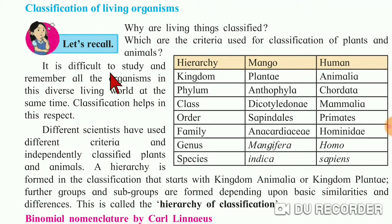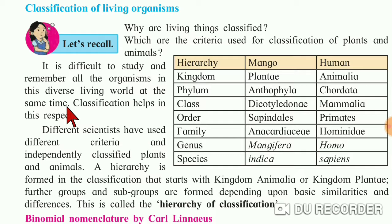It is difficult to study and remember all the organisms in this diverse living world at the same time. There are so many varieties of plants and animals, and keeping track of all of them is very difficult. That's why classification helps in this respect.